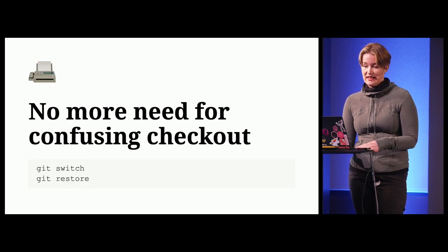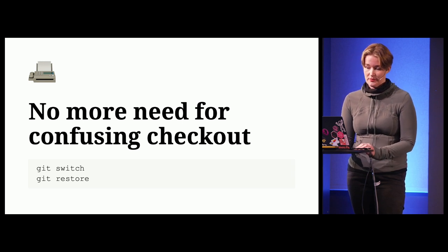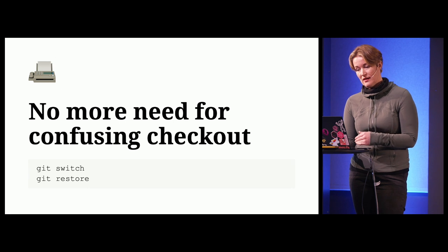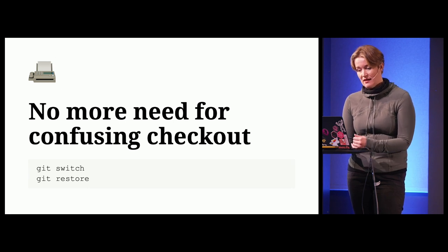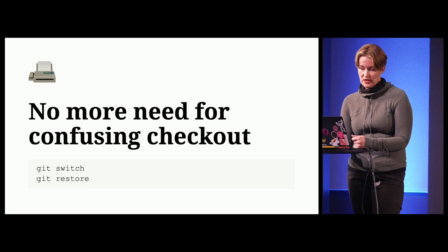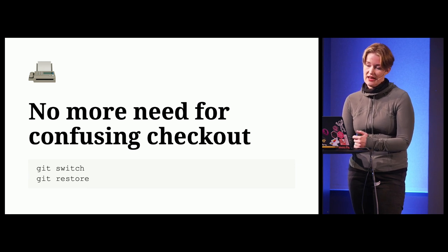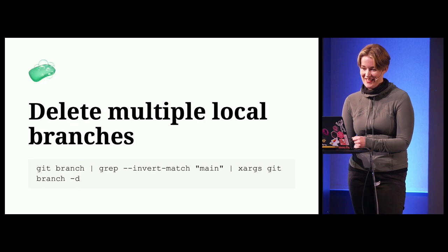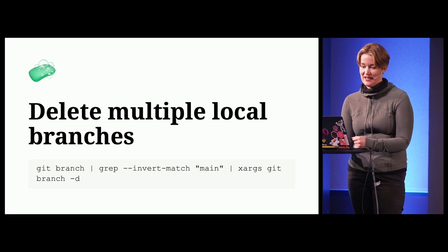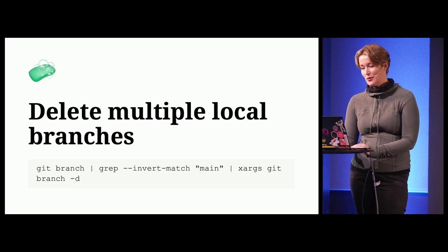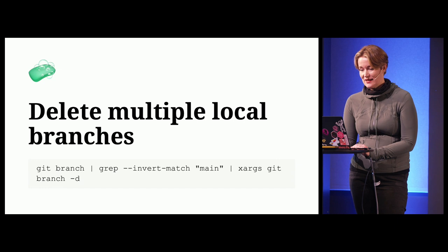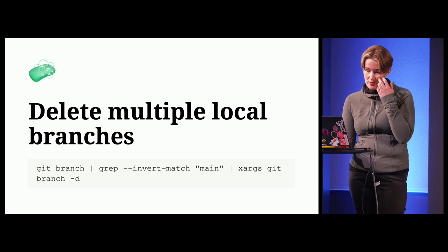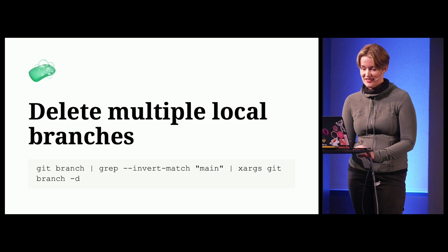There's also no more need for the confusingly named checkout, because in newer versions of Git there is git switch and git restore. Git switch deals with branches and git restore handles operations that change files. I've completely forgotten how to use git checkout, which is perfectly fine. And here's one I'm really happy about having found, because I tend to end up with a lot of local branches and needed a way to get rid of all of them at once — I wrote a blog post about this that kind of deconstructs the command.